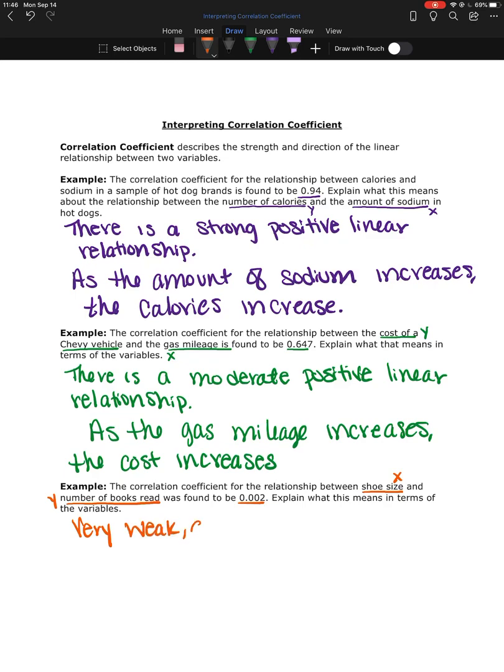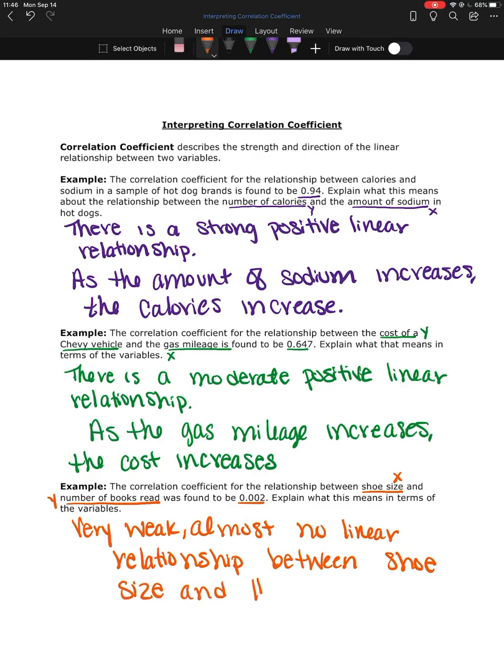So there is a very weak, almost no linear relationship because it's so close to zero, between the shoe size and the number of books read.